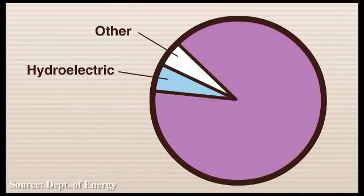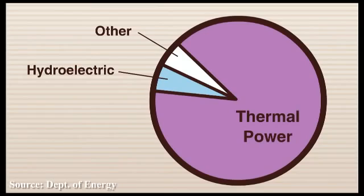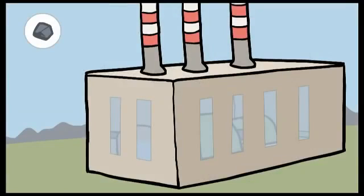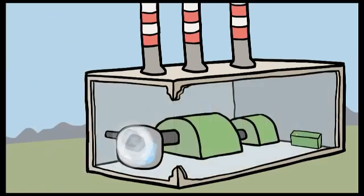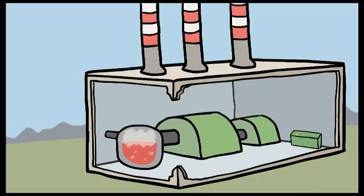Today, the majority of America's electricity comes from thermal power plants. Fuels like coal, natural gas, biomass and uranium are used to heat water until it produces steam, which powers a turbine and generates electricity.